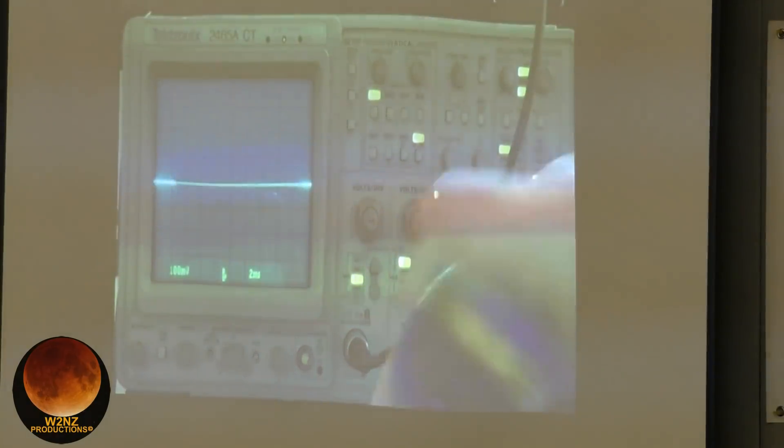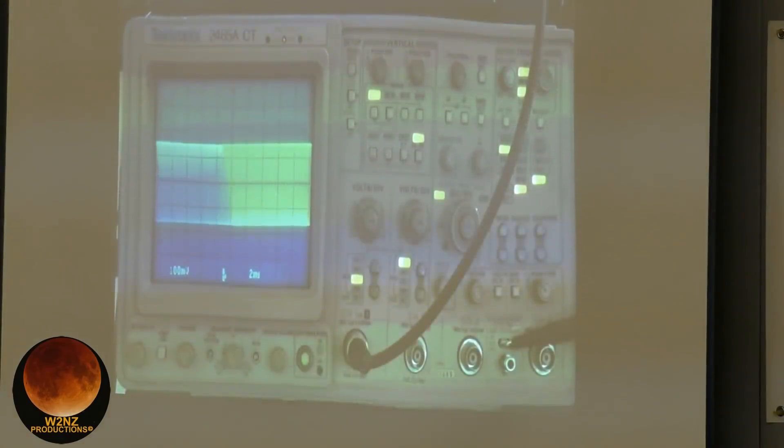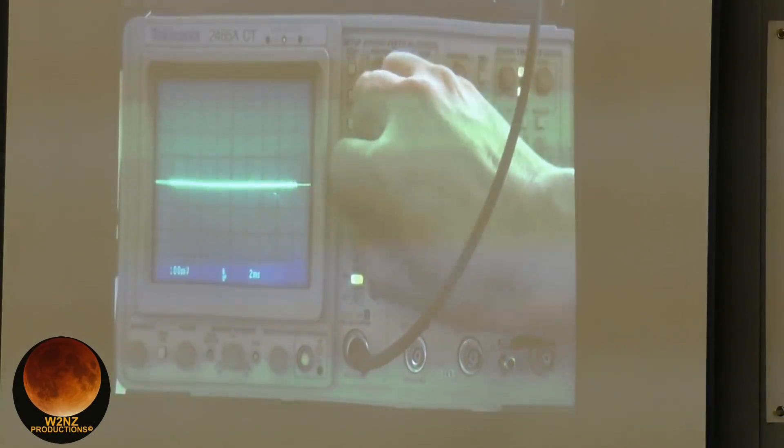If I switch modes to something like FM, obviously with FM I can't see anything going on modulation-wise. All I see is the RF envelope.